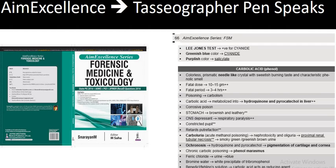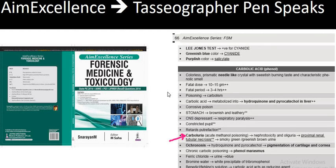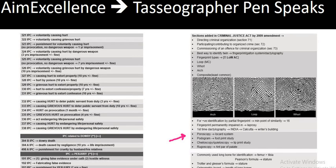Another book from the M-Excellence series is on forensic medicine and toxicology. We are mentioning the important questions that came in the recent examination — this is on carbonyl urea — and all the important points that can be your future examination questions are already mentioned here. We have looked at the topic in totality, and any Second M student giving their FMT paper would have scored five out of five if they had gone through this book.